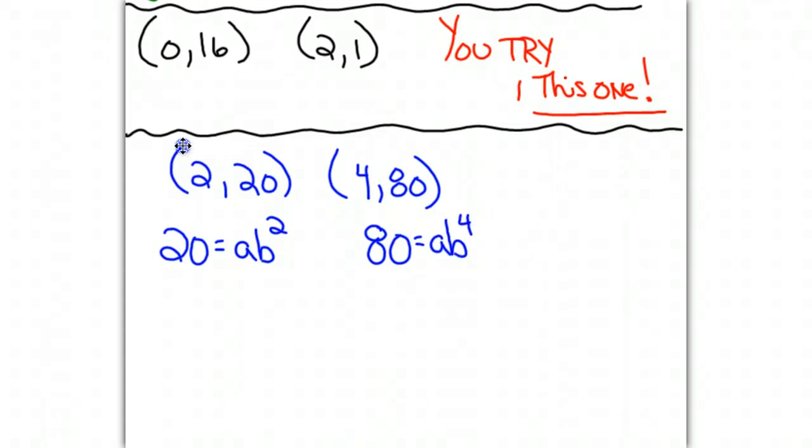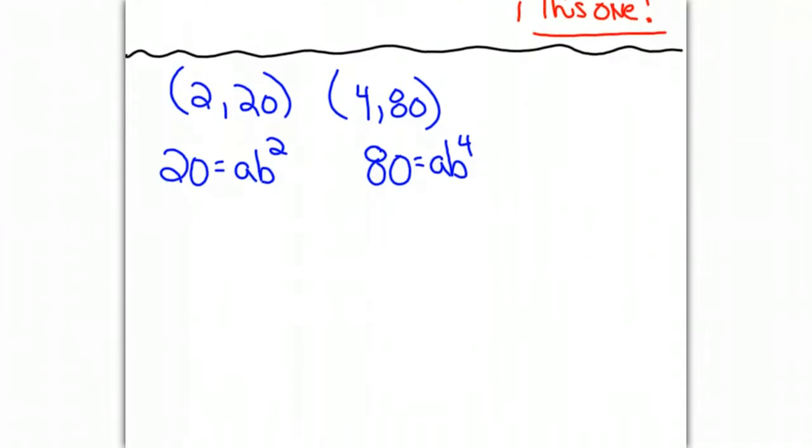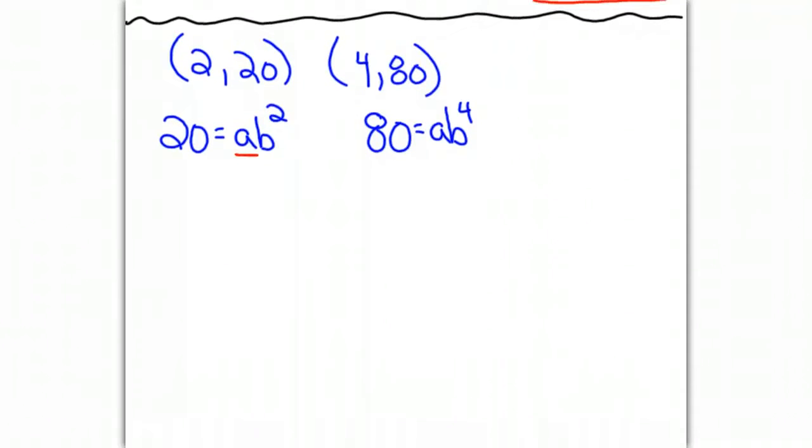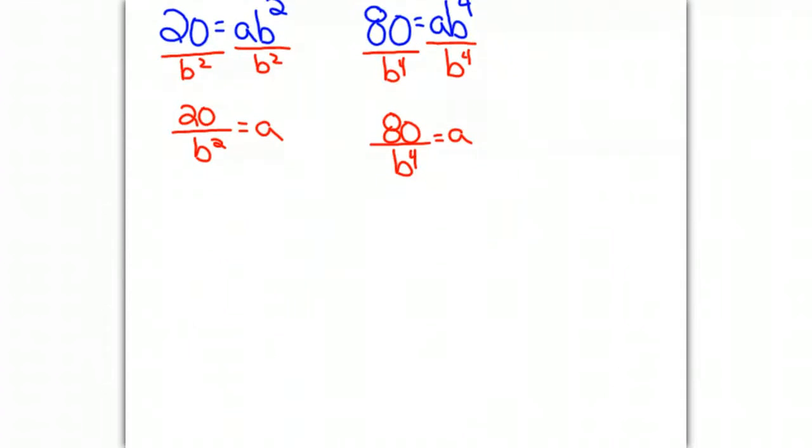Now the simplest way to do this is to solve each of these equations for a. So I'm going to divide by b squared and 20 over b squared equals a. And on the second equation, I will divide by b to the 4th, and that will tell me that 80 over b to the 4th equals a. What I can now do is set these two equations equal to each other. 20 over b squared will equal 80 over b to the 4th because they're both equal to a, so they have to be equal to each other.